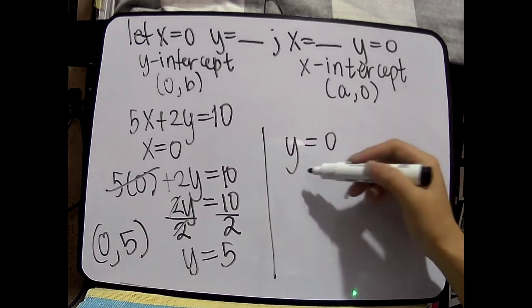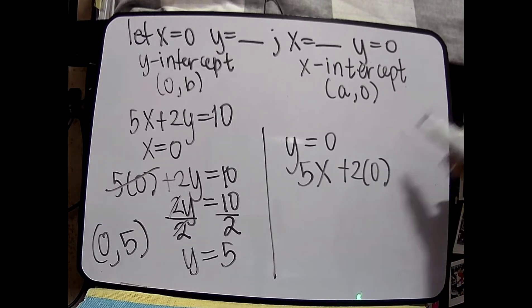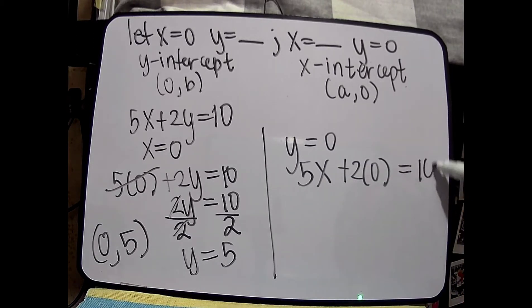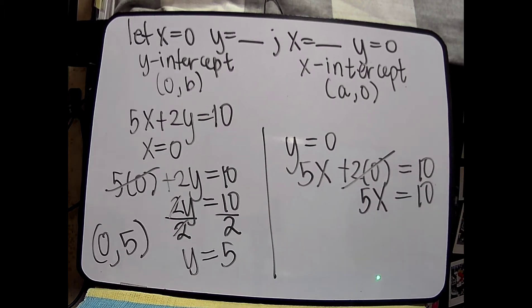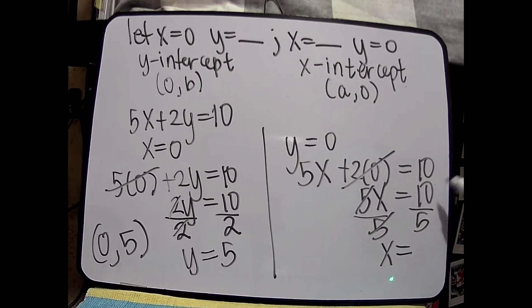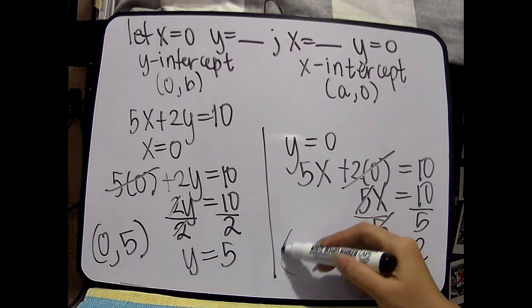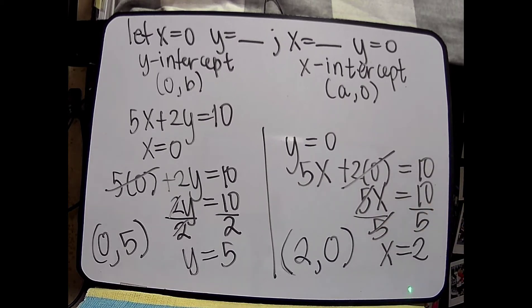This time naman, isusubstitute natin yung 0 sa y. So, yung 5x, yung x pa rin, plus 2, and then yung 0 naman ngayon ay yung y, equals to 10. So, mawawala yun kasi any number multiplied by 0 is equals to 0. And then, 5x is equals to 10. Multiply both sides by one-fifth, for application of MPE, or divide both sides by 5. So, x is equals to 10 divided by 5, which is 2. So, ang ordered pair natin this time ay (2, 0) — yung 2 yung nakuhang value for x, and yung 0 sa y kasi siya yung sinubstitute.